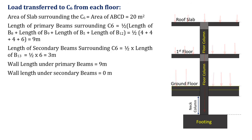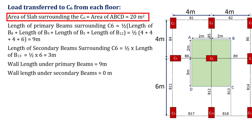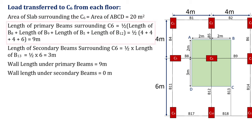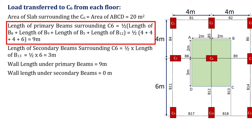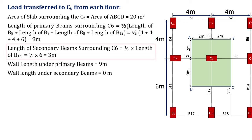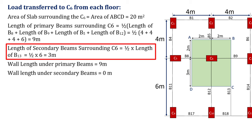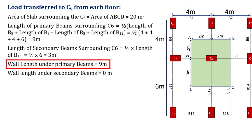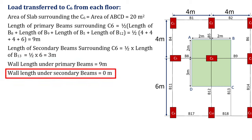Now we calculate the load transfer to column 6 from each floor separately. Area of slabs surrounding column 6 is 20 m². Total length of primary beams surrounding column 6 equals ½ × (B8 + B9 + B5 + B12) = 9 meters. Total length of secondary beams equals ½ × length of B13 = 3 meters. Wall length under primary beams is 9 meters. Since no wall is provided under secondary beams, wall length under secondary beams is 0.